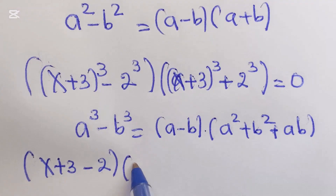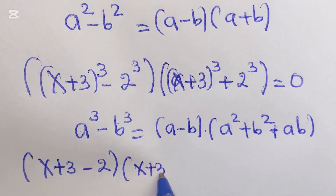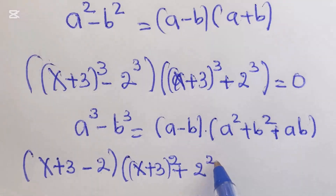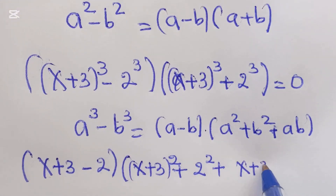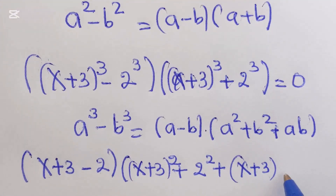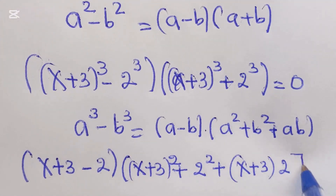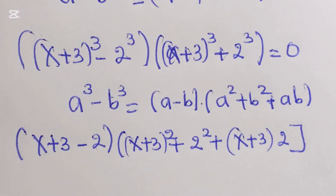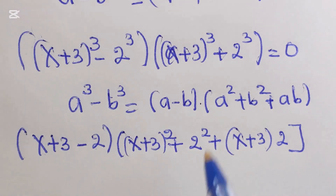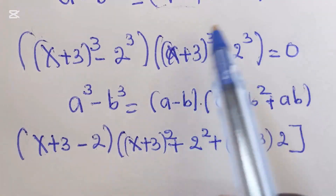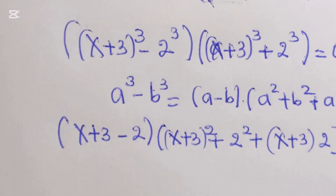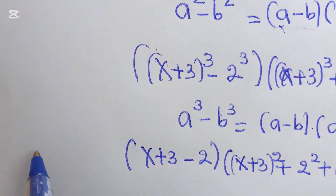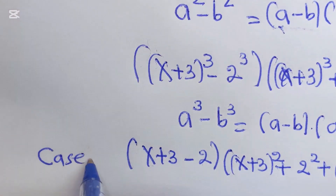This gives us: a squared is equal to x plus 3 squared, plus 2 squared, plus a times b, which is equal to x plus 3 times 2. This is Case 1.